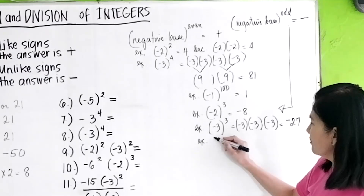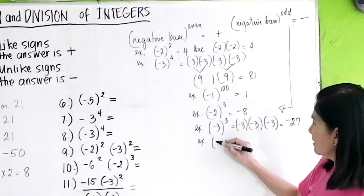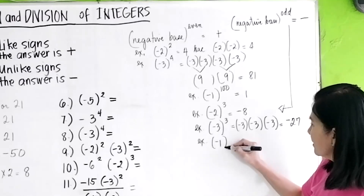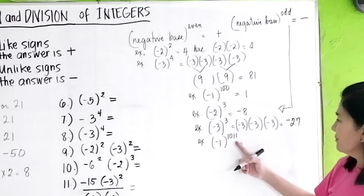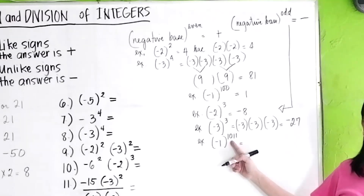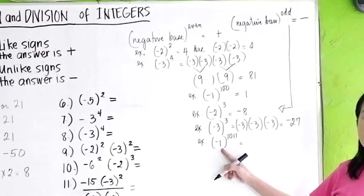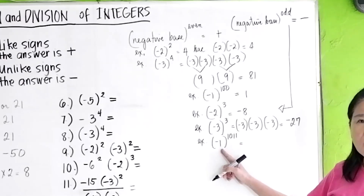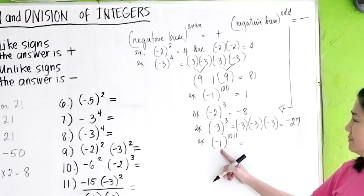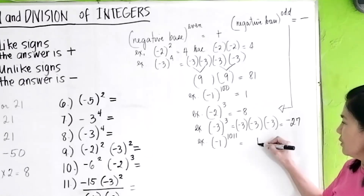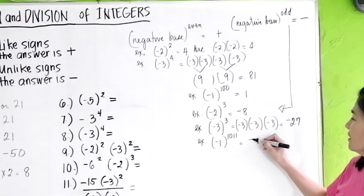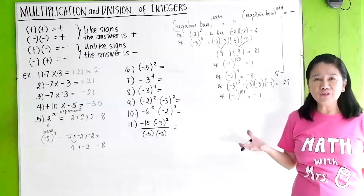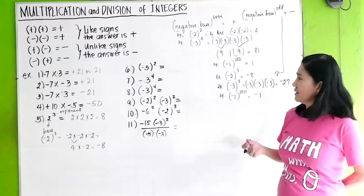So if you have negative 1 raised to the 1011th — which is an odd number — 1 times 1 times 1 will always be 1, but since the exponent is odd, you get negative 1.